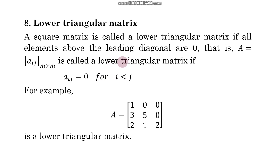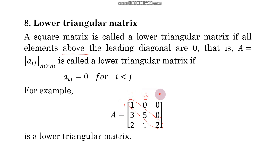Similarly, we can define a lower triangular matrix. Lower triangular means all elements above the leading diagonal are 0. The elements above the diagonal satisfy i < j. For example, if element position has row 1 and column 2, then 1 < 2; similarly 2 < 3. So A = [a_ij] of order m by m is called a lower triangular matrix if a_ij = 0 for i < j.